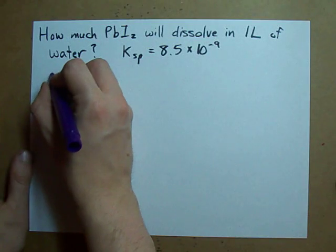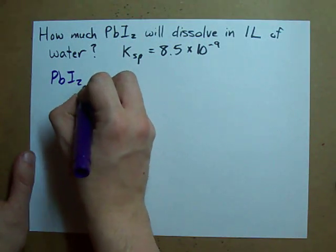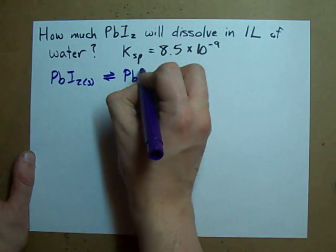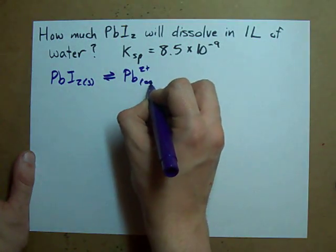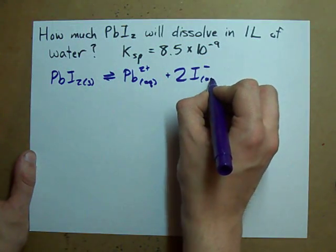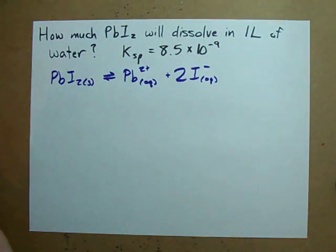When PbI2 dissolves, what does it make? It makes a Pb2+ ion, obviously dissolved in water, and it makes two iodide ions, also dissolved in water.